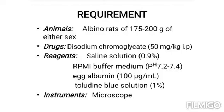Requirements. Animal: albino rat of either sex. Drug: disodium chromoglycate 50 mg per kg. Reagents: saline solution 0.9%, RPMI buffer, egg albumin, toluidine blue solution. Instrument: microscope.